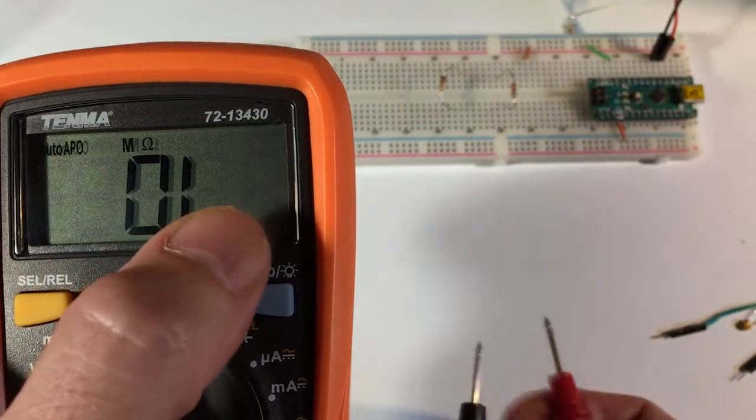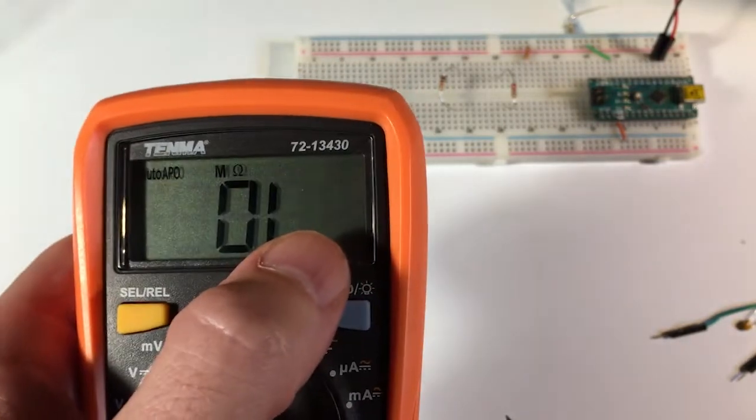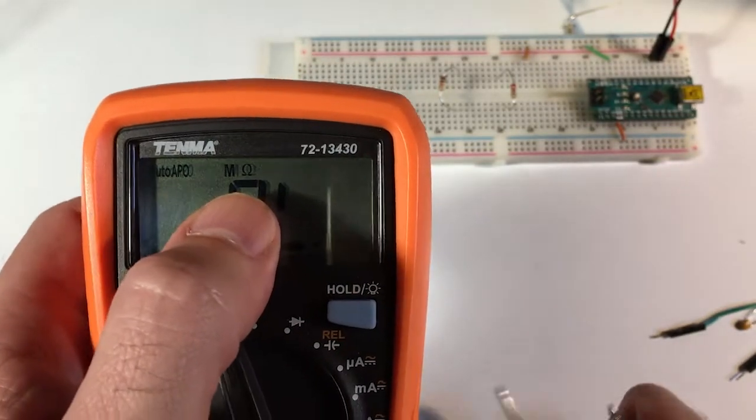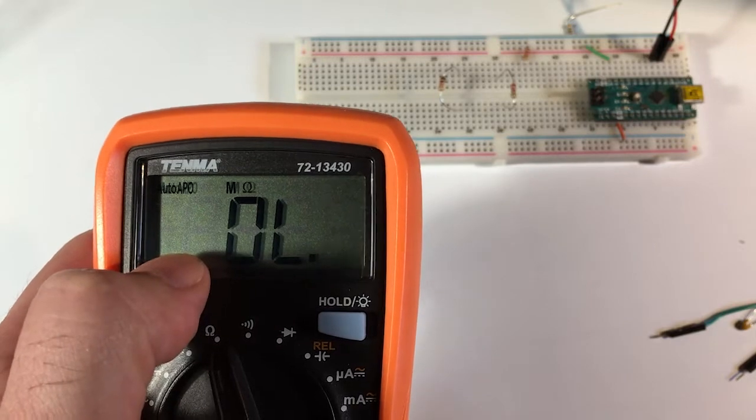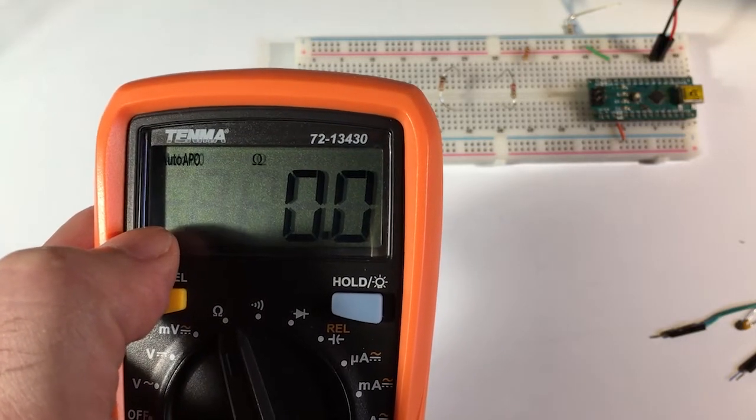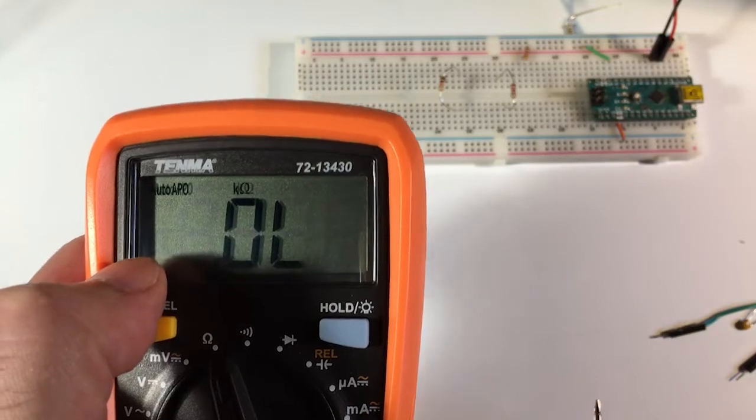You can see as I release it, it starts out as megaohms. That's what the M means, that's millions of ohms. And then it works its way down as I touch the terminals together to kilohms and finally ohms.